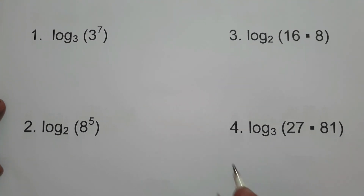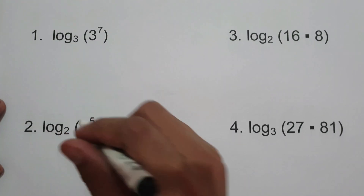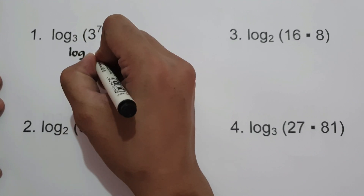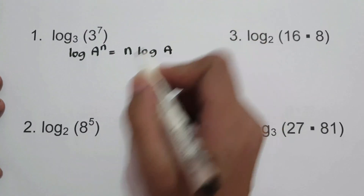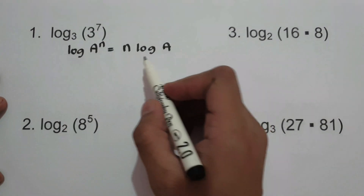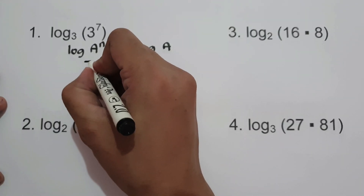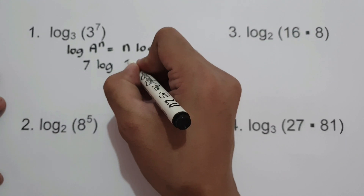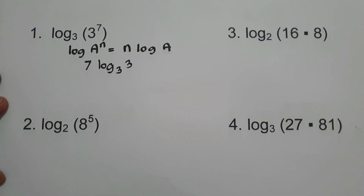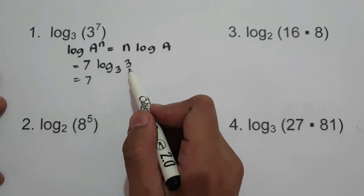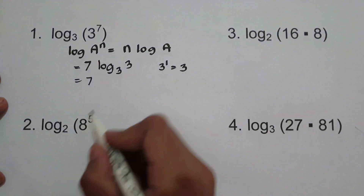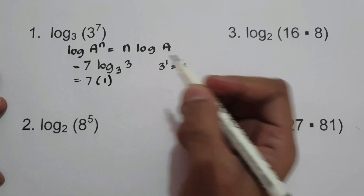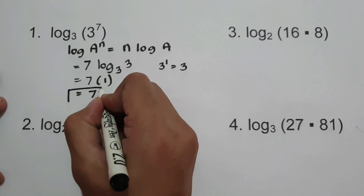On number 1, we have log of 3 raised to 7, to the base 3. We are going to use the property log(a raised to n) equals n log a. So n is 7, giving us 7 times log 3 base 3. Now, log 3 to the base 3: 3 to what power is 3? We know that 3 raised to 1 is 3. Therefore, log 3 base 3 is 1. So our answer is 7 times 1, which is 7.